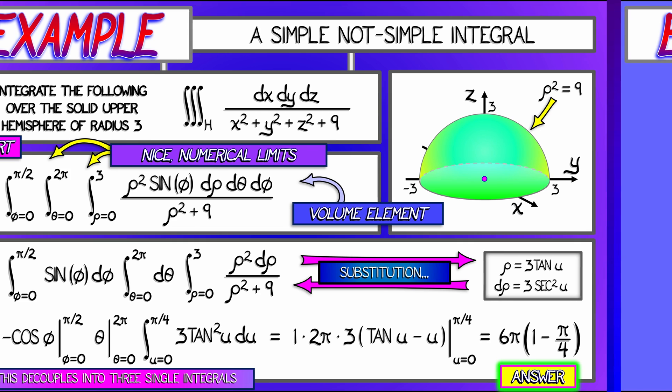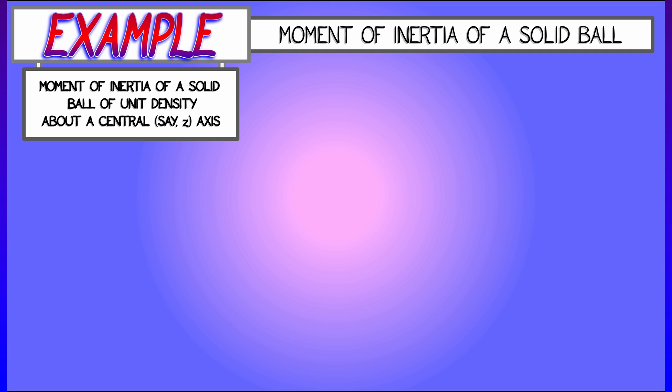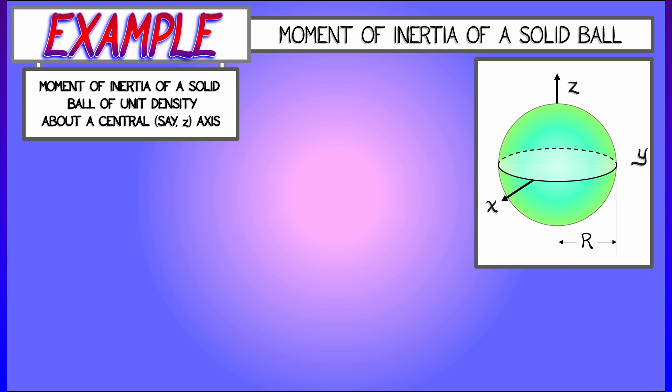Here's another similar example. Let's finally compute the moment of inertia of a solid ball of unit density, and let's say we rotate about an axis going through the origin, the z-axis. This geometry is perfect for spherical coordinates.